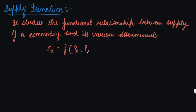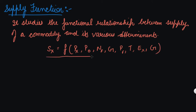The supply function is a function of: the price of your good, the price of related goods, the number of firms in the market, the goal of the firm, the price of factors of production, the technology, expectations in future, and government policy. Supply is affected by all these factors.